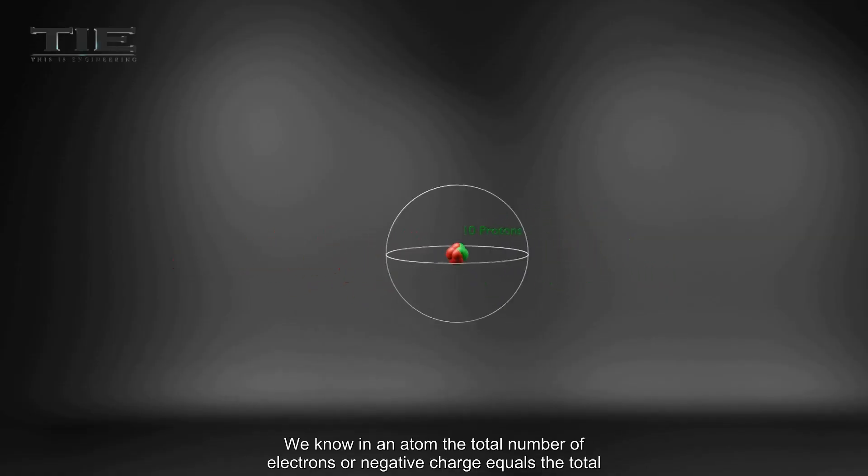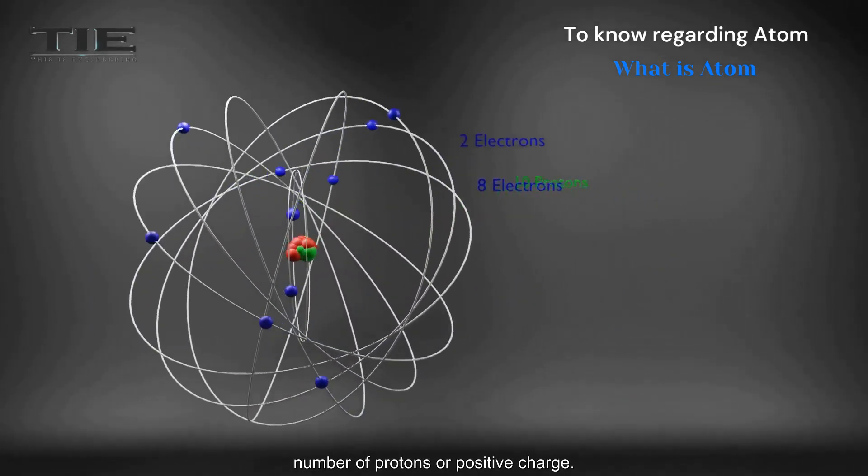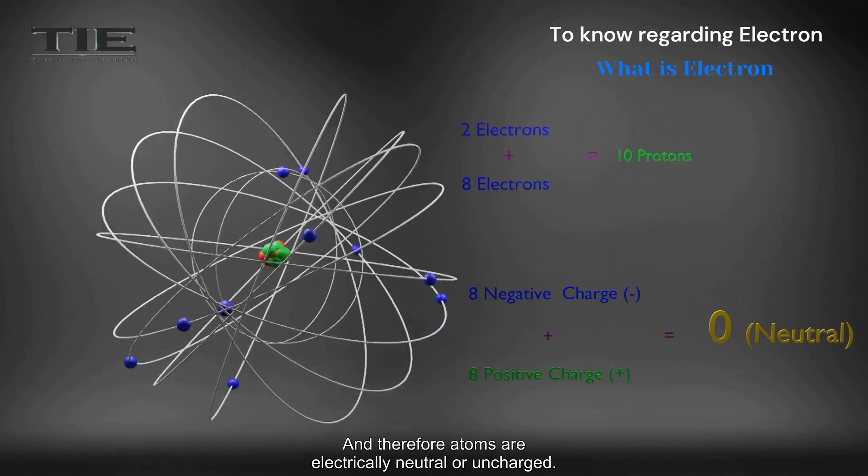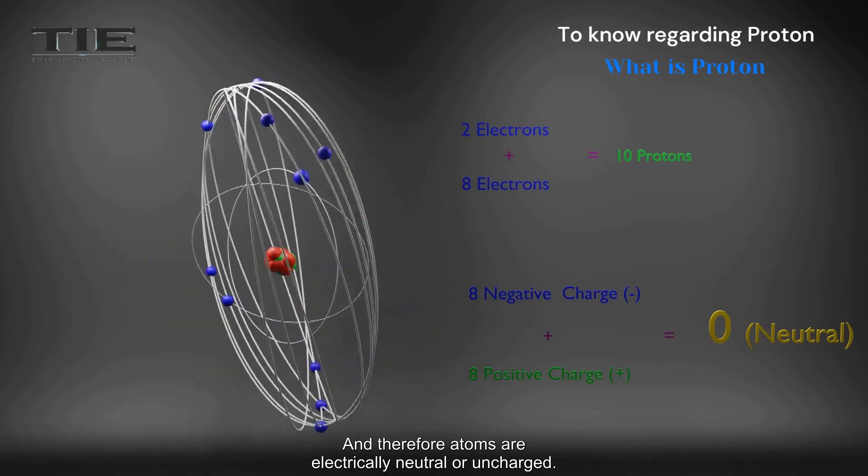We know in an atom, the total number of electrons or negative charge equals the total number of protons or positive charge. And therefore, atoms are electrically neutral or uncharged.